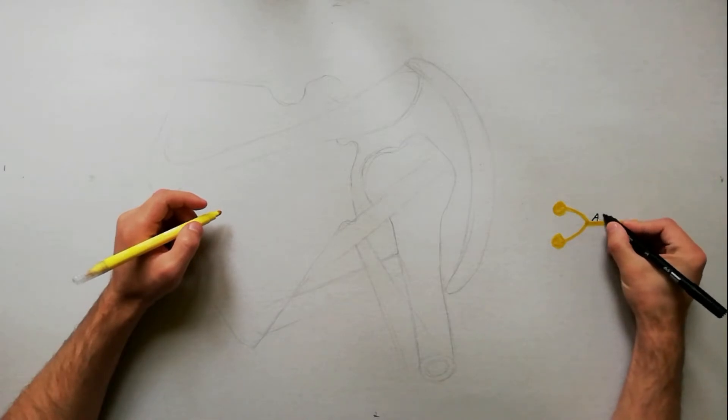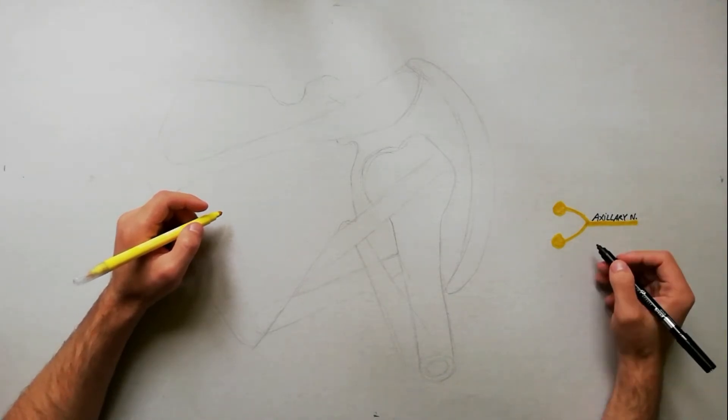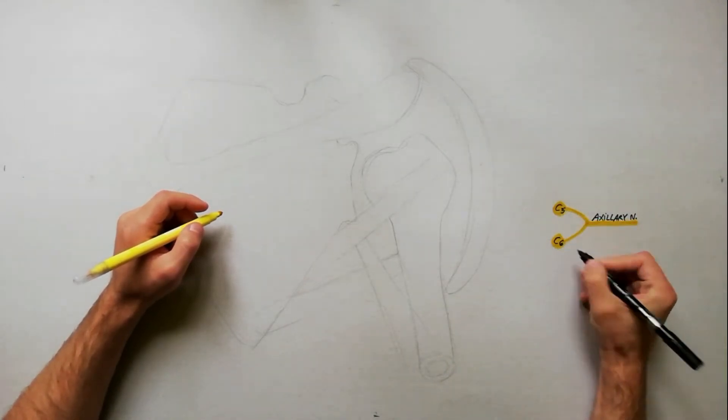The axillary nerve is a mixed nerve and arises from the posterior cord of brachial plexus, carrying fibers from the C5 and C6 spinal nerves.